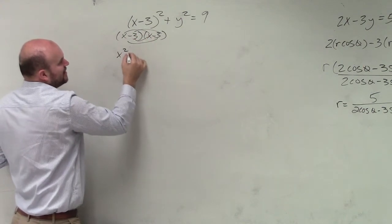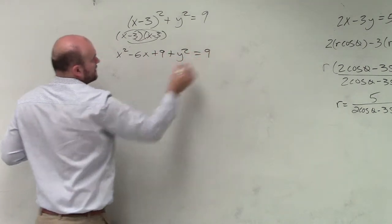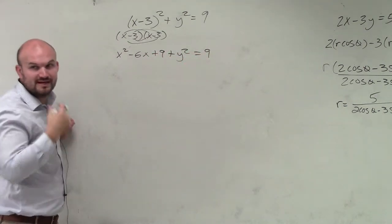You apply FOIL. And what we get is x squared minus 6x plus 9 plus y squared equals 9. I'm going to agree with me with my expanding.